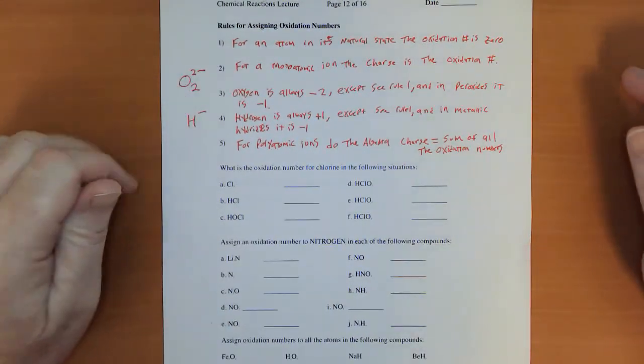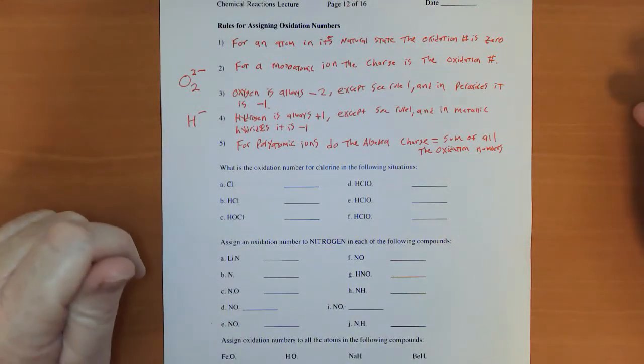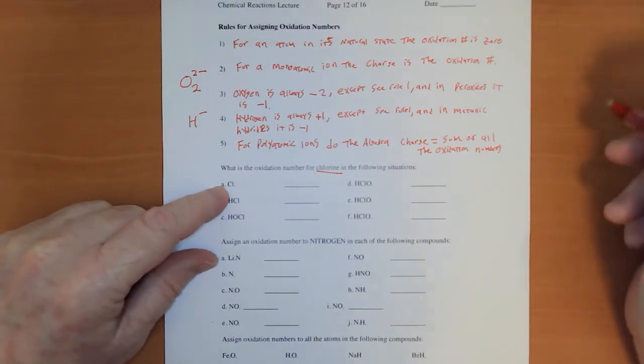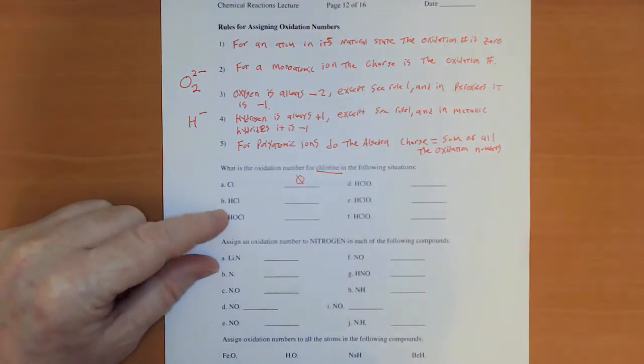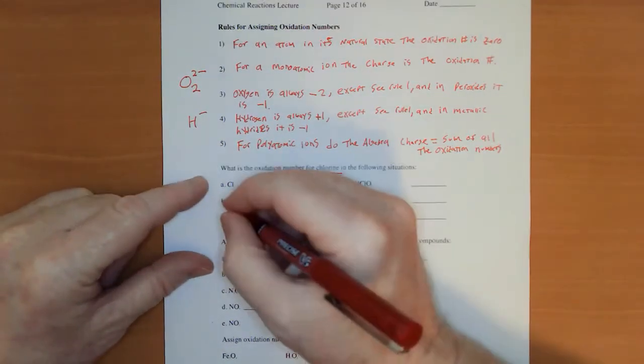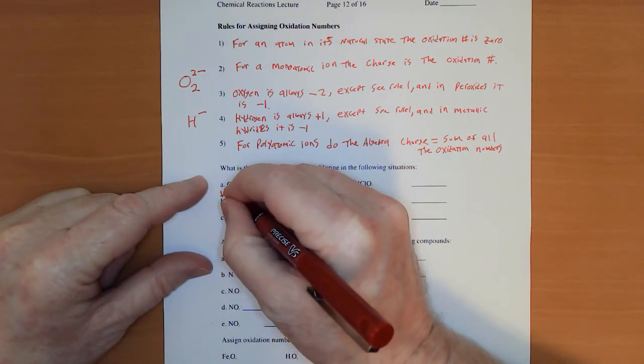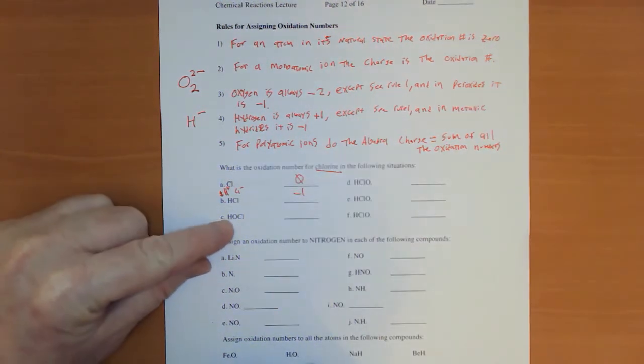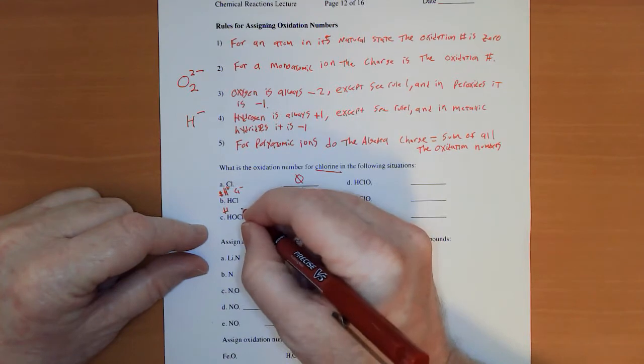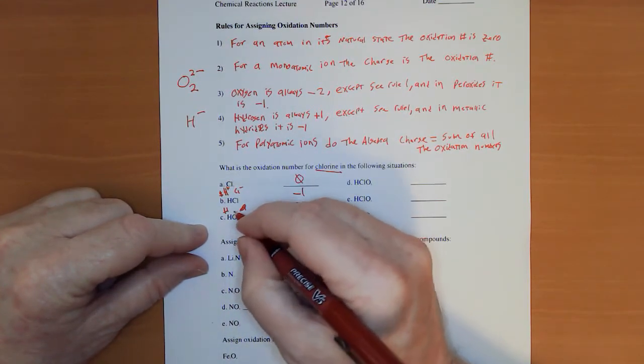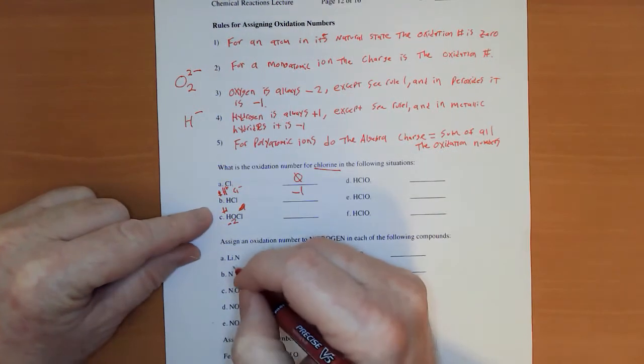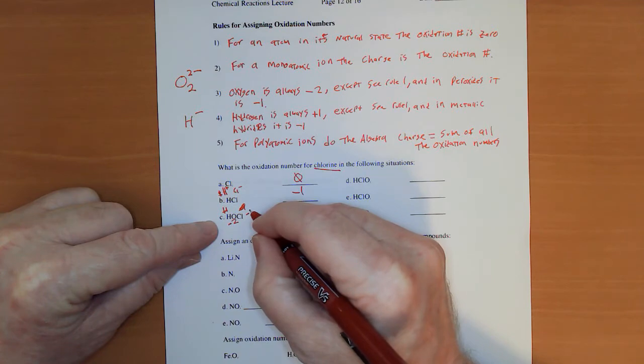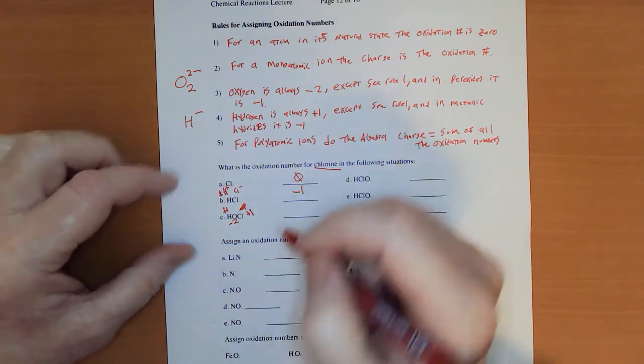So let me give you a few examples then send you out to try to do a few on your own. So we're going to focus on chlorine. Cl2 is its natural state. Must be zero. HCl. Well that is an H plus and a Cl minus. So that's a negative one. HOCl. Well we know hydrogens are plus one and oxygens are minus two. So those rules, that means that chlorine must be a positive one for the whole thing to add up.